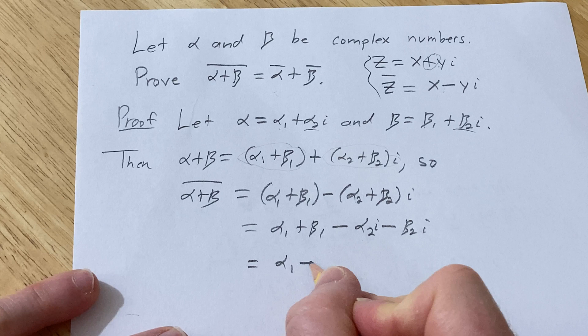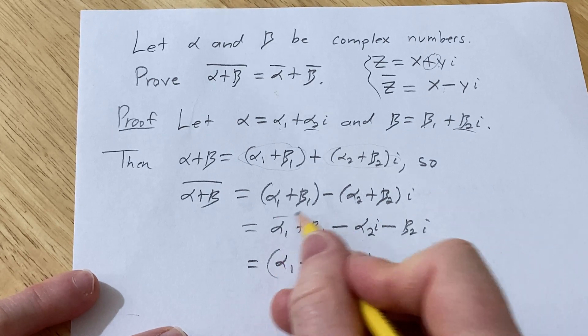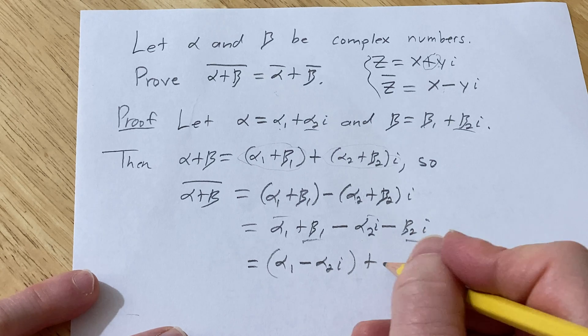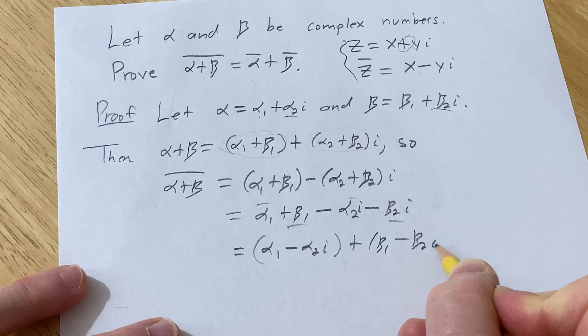And so let's see if we can combine the alphas and the betas. So this is alpha sub 1 minus alpha sub 2i, plus, that's combining these, and now let's combine these, beta sub 1 minus beta sub 2i.